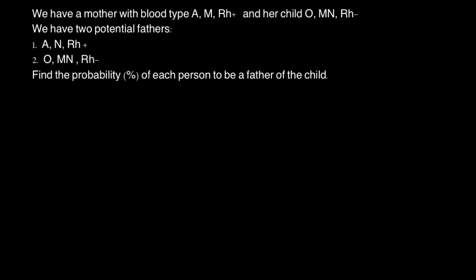So how are we going to solve this problem? First, we have to find the genotypes of the parents and of the child. As you see, the mother's phenotype is A, but the child's blood group is O. How is that possible? Especially if we consider potential father number one, who also has phenotype A. Yes, it is possible if the mother's genotype is A-O and the father's genotype is also A-O.